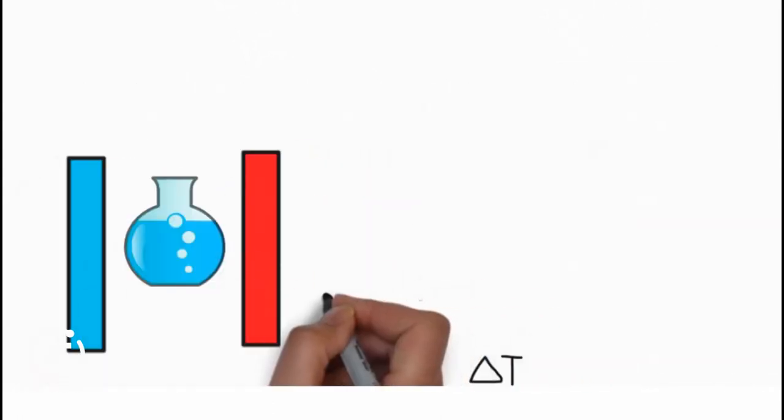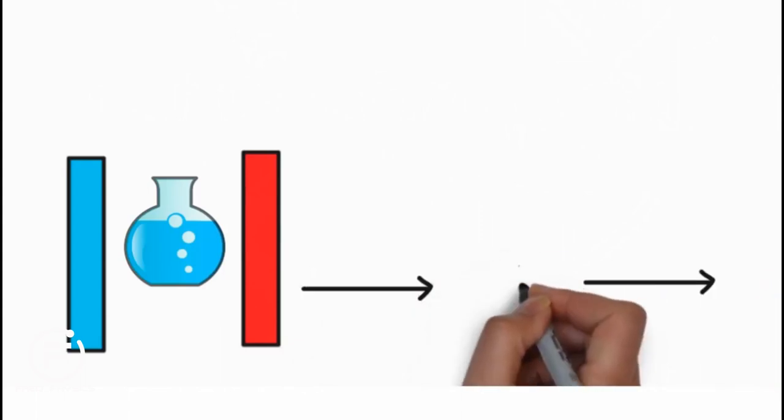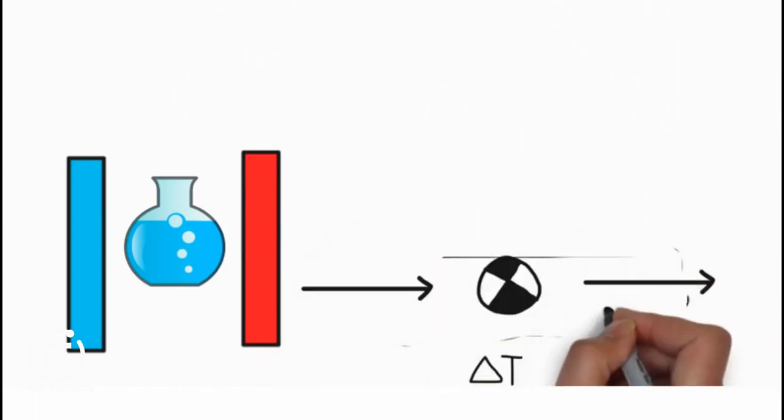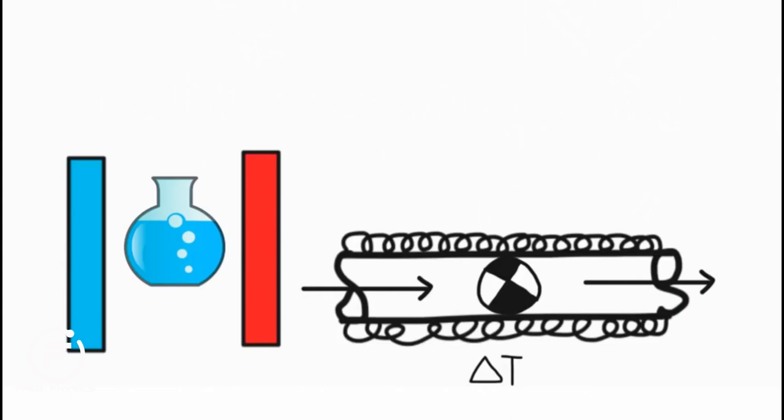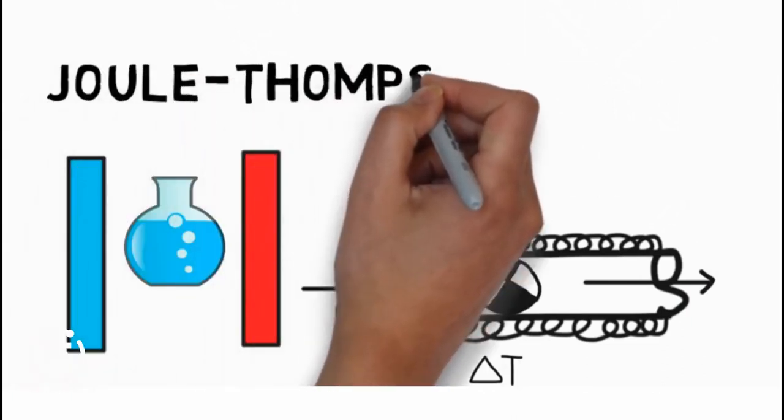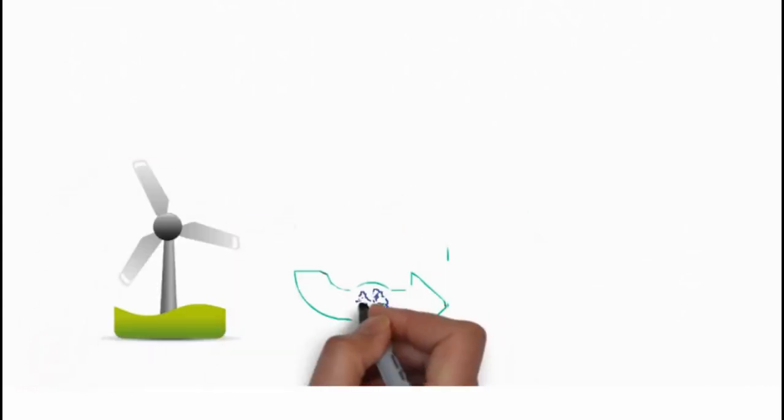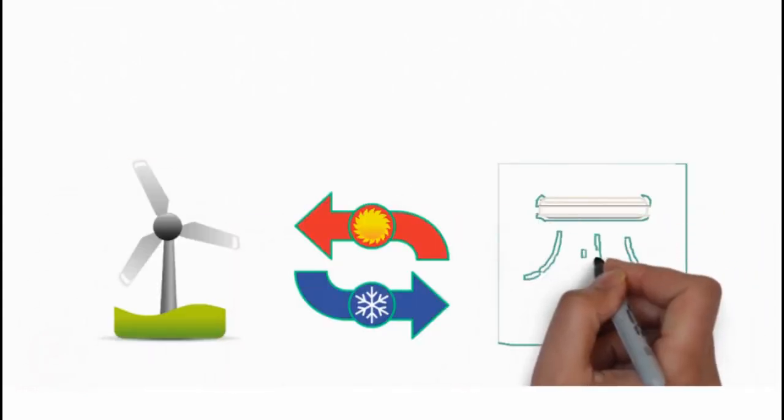There is a temperature change in a real gas or liquid when it is forced through a valve or a porous plug while being kept insulated so that no heat is exchanged with the environment. This effect is called the Joule-Thompson effect and is widely exploited in thermal machines such as generators, heat pumps, and air conditioners.